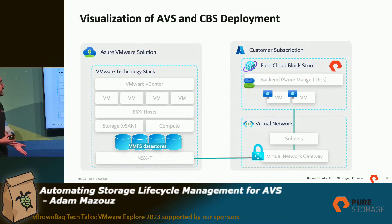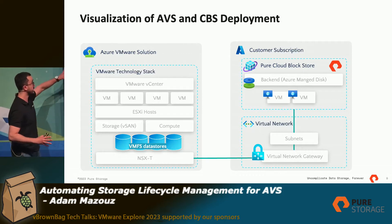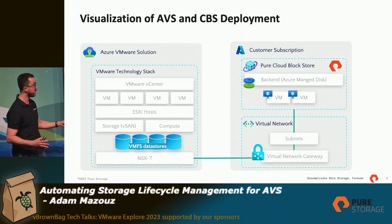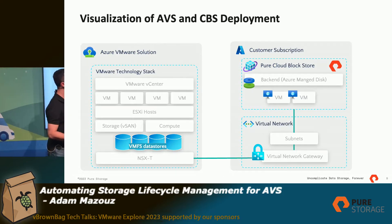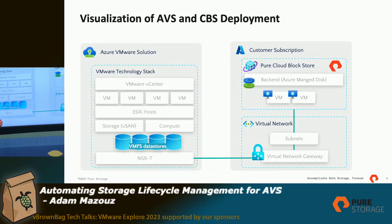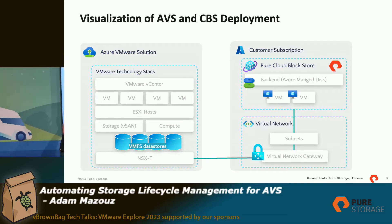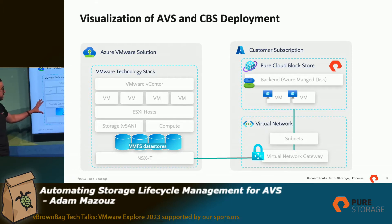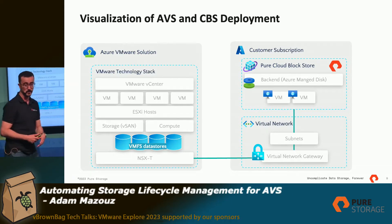To visualize the whole deployment: you start with AVS — you have your VMware stack, your vCenter, your NSX. Then you deploy your Cloud Block Store, which is in your subscription. Then you connect the virtual network where Cloud Block Store resides to the AVS cluster using ExpressRoute and the virtual network gateway.